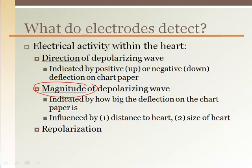The size of the wave also tells you how much muscle mass is involved. Atria make small waves, ventricles make big waves. People with ventricular hypertrophy, which is enlarged muscle mass often due to high blood pressure, have even bigger electrocardiogram waves.